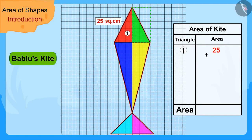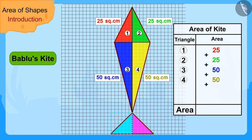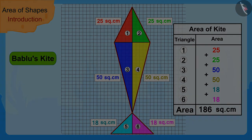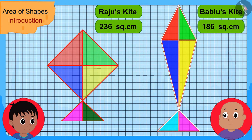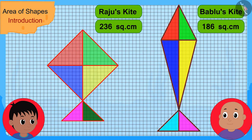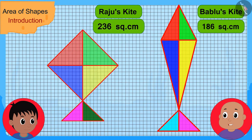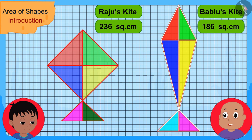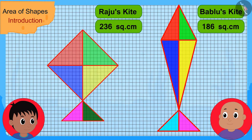We can find the area of Bablu's kite in this way. Bablu's kite has an area of 186 square centimeters. Raju also found the area of Bablu's kite just like you. Bablu told Raju, 'Your kite's area is 236 square centimeters and my kite's area is 186 square centimeters. So your kite is bigger than my kite.'